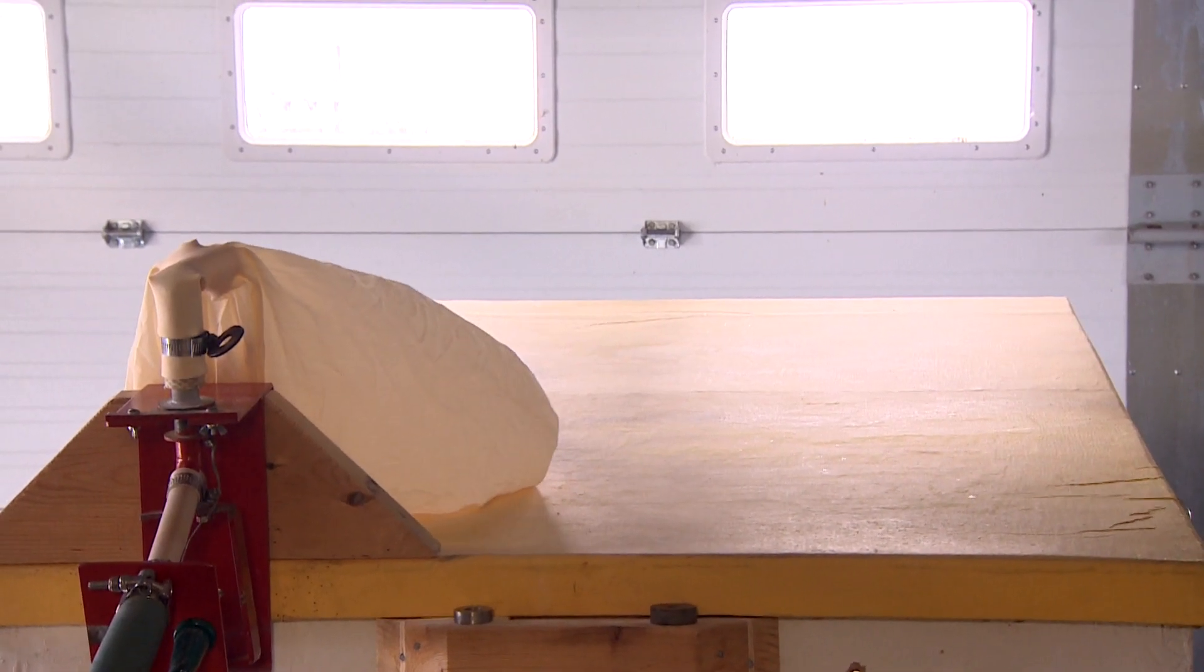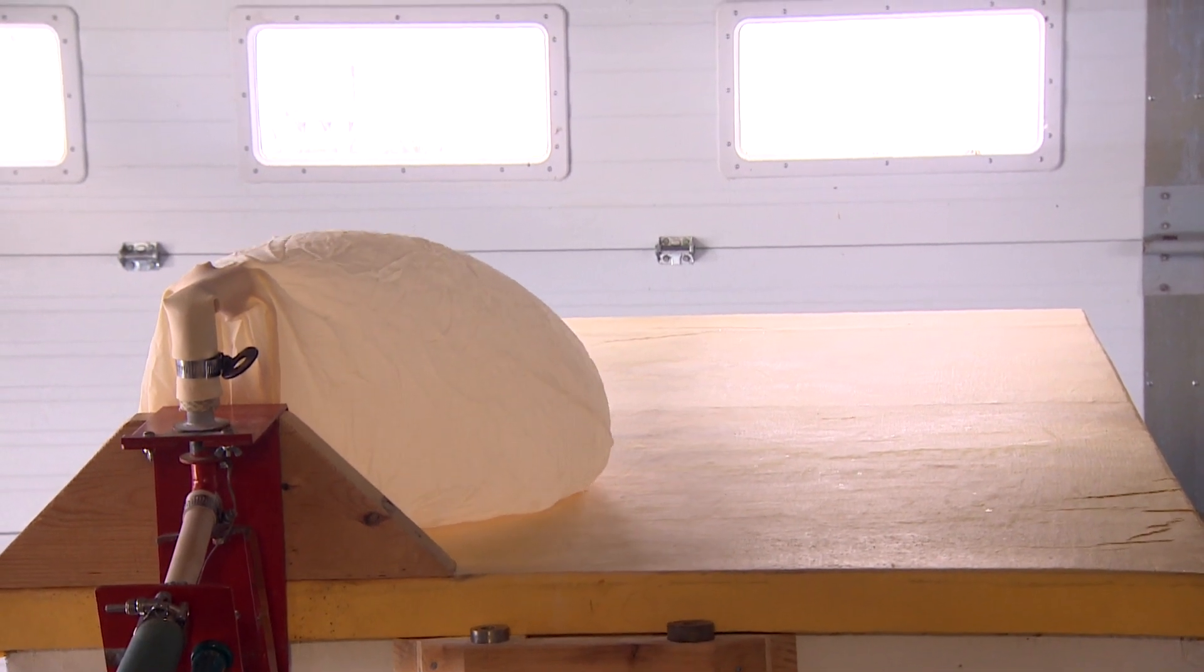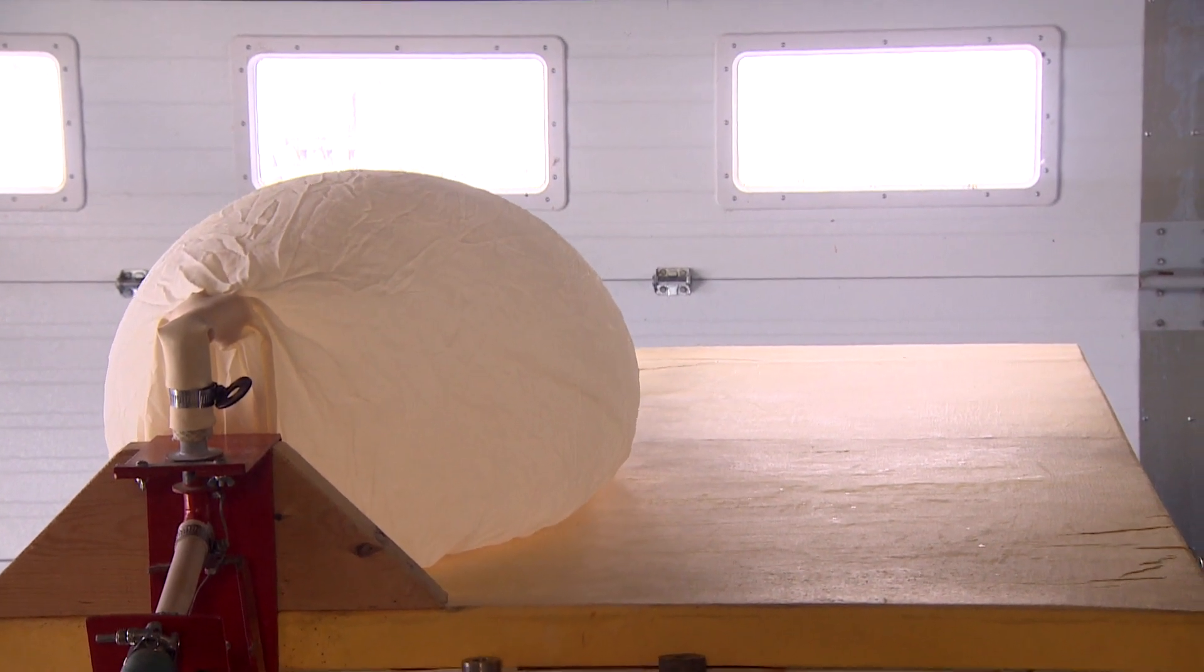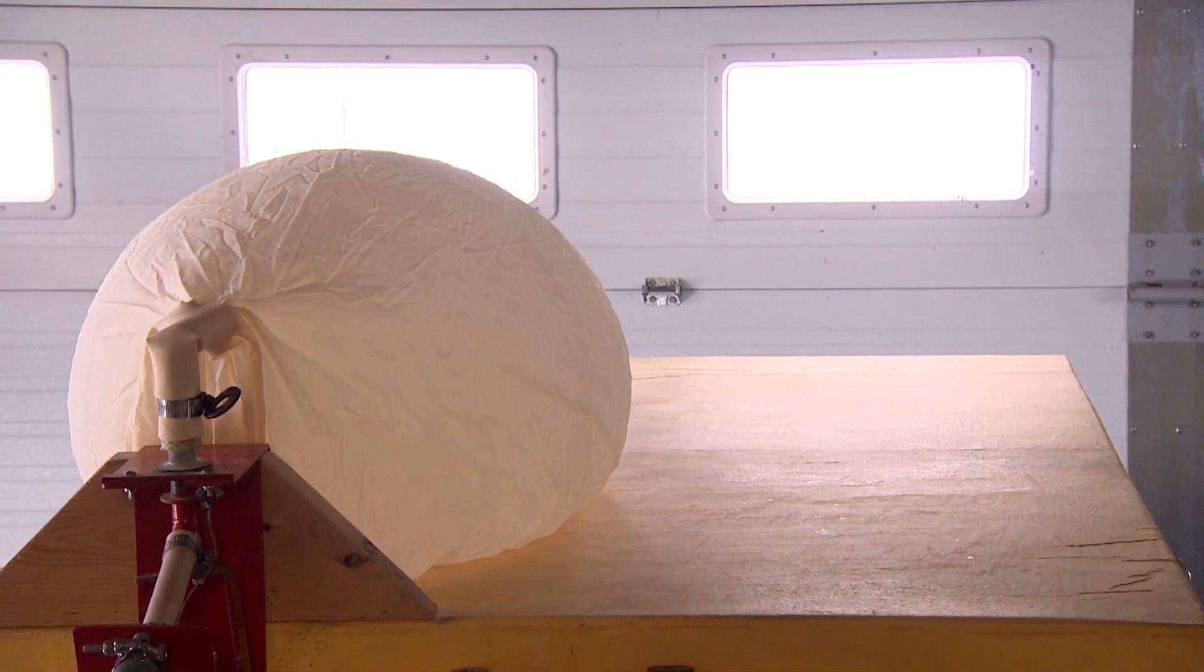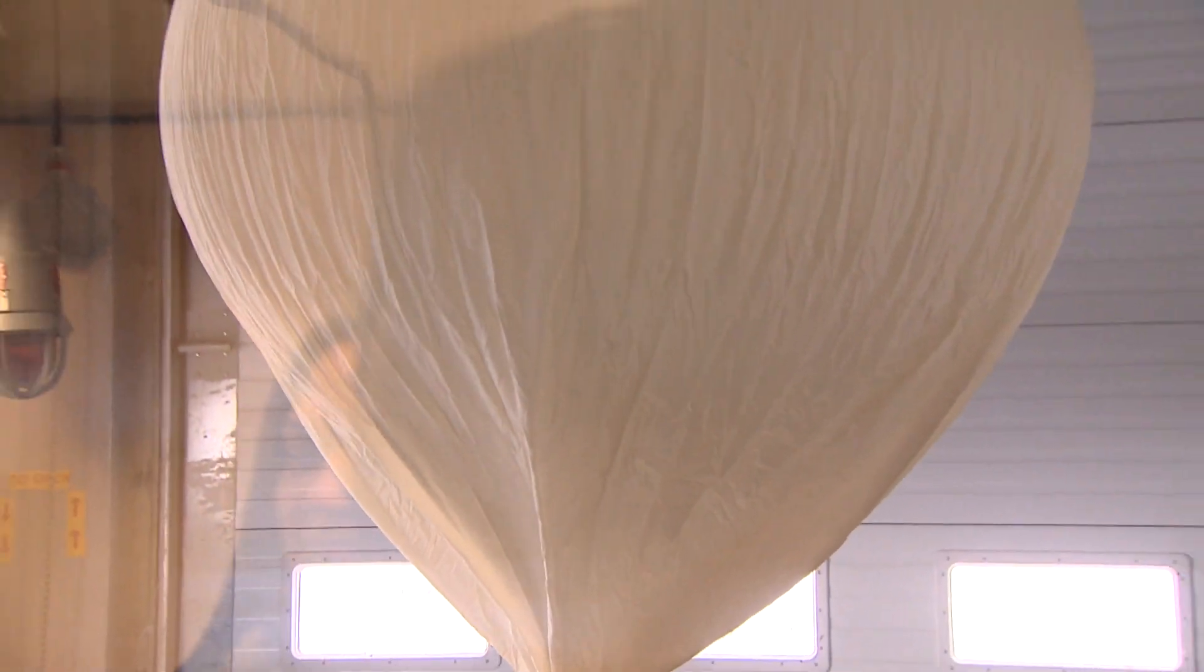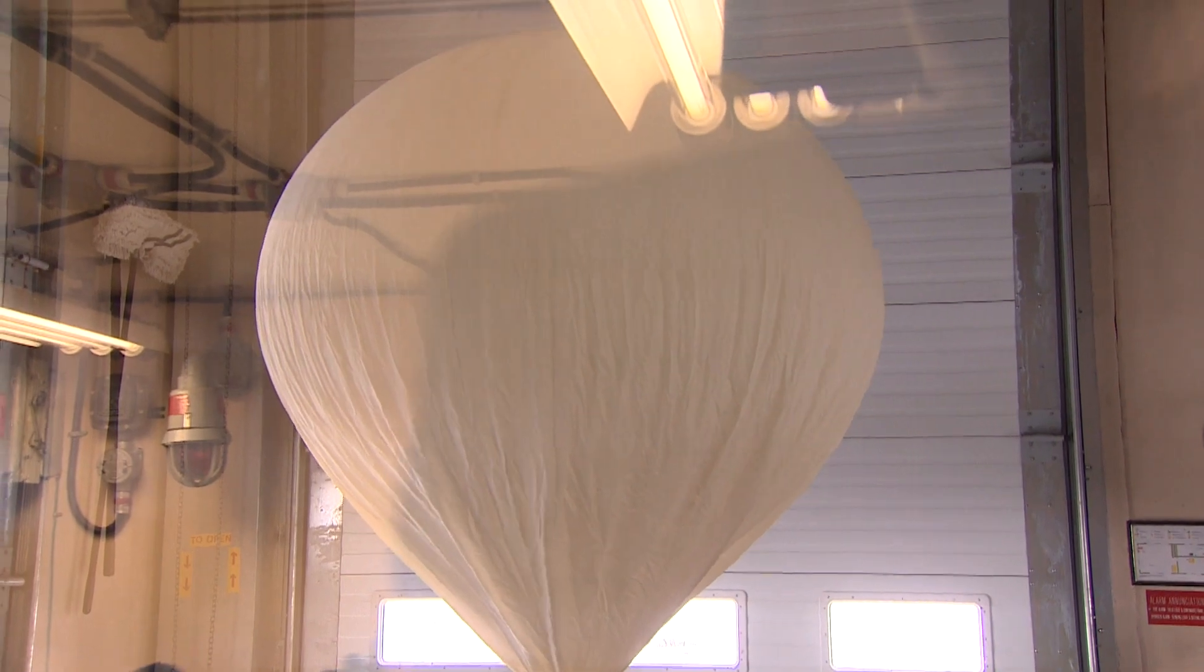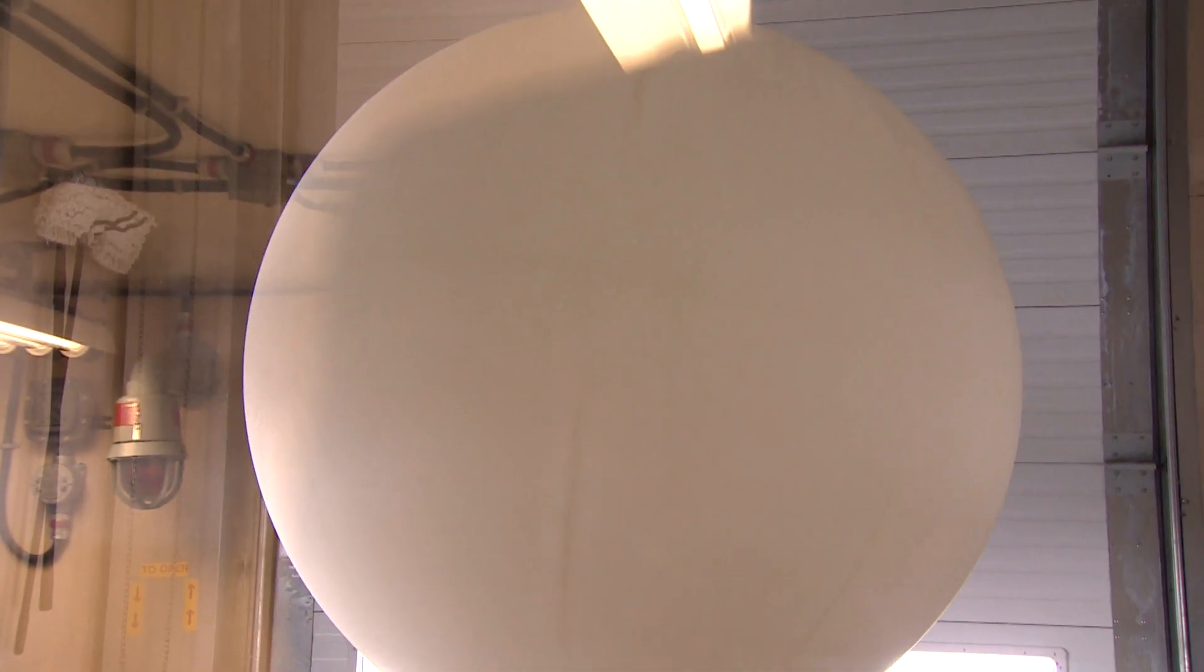We're going to use what to fill it up? We are going to use hydrogen. We have a hydrogen generator on site. How much actually depends on the weather conditions. If there's precipitation outside, you might want to put a little bit more in, just because we're aiming for a certain ascent rate. Today, I'm going to put in 1,000 grams of hydrogen.